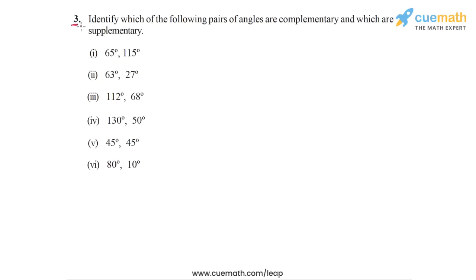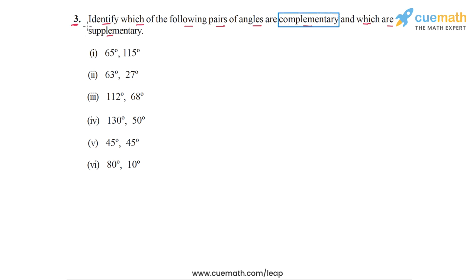In question 3, the problem statement says: identify which of the following pairs of angles are complementary and which are supplementary. We are given six pairs of angles and we have to identify which of them are complementary and which are supplementary.